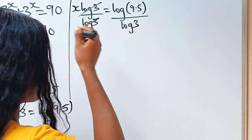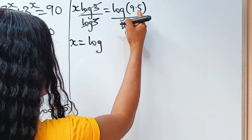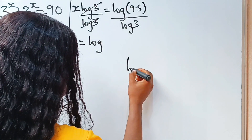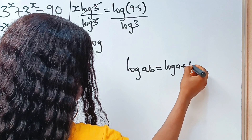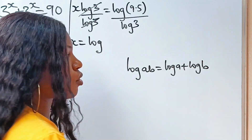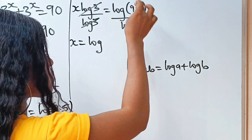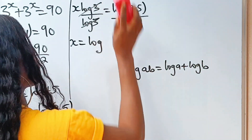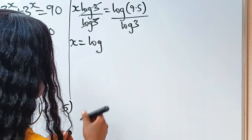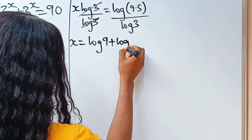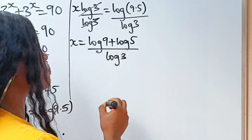This divides this, and we have that x is equal to log of 9 multiplied by 5. When you have log a·b, it's the same thing as log a plus log b. So we are going to express this in that form and go ahead and do that.